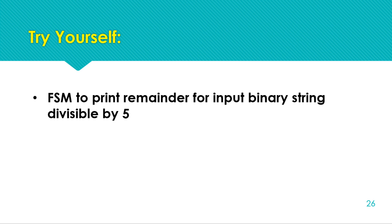In the next lecture we will discuss how to convert from one machine to another — from Moore machine to Mealy machine and from Mealy machine to Moore machine. We will also consider further examples. Till then, try this practice question: design an FSM to print the remainder when an input binary string is divided by 5. For all divisibility questions, we follow the same approach as DFA.